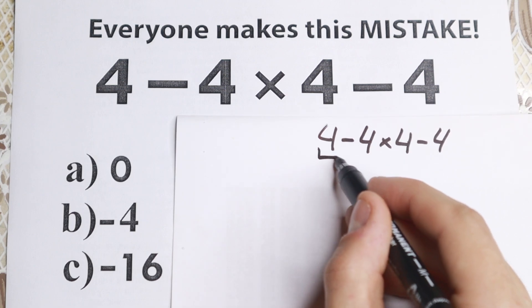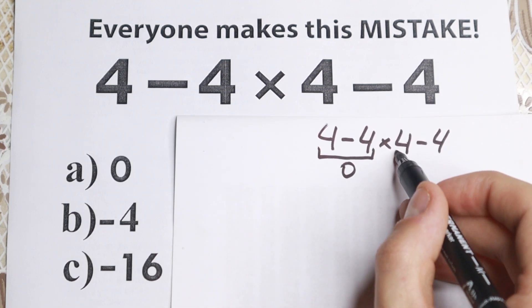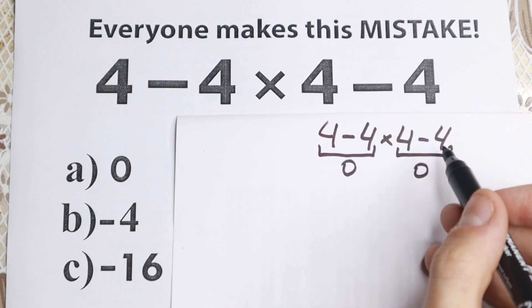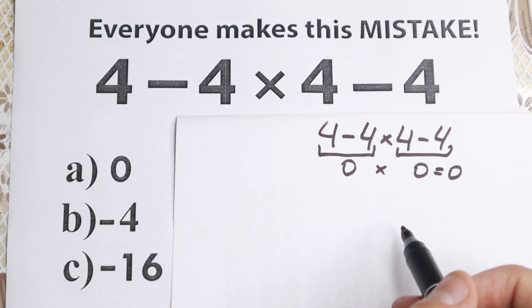So take a look, they say okay right here we have 4-4, this is really great, because they know okay 4-4 equals 0, and right here we have 4-4 equals 0, and they say okay 0 times 0, right here multiplication, and they say okay the answer is a, is 0.